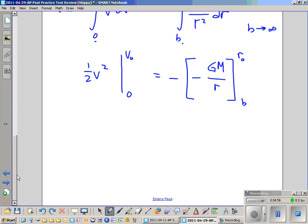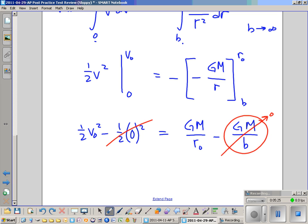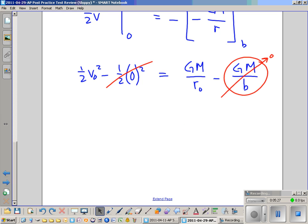So this means one half v naught squared minus one half zero squared, which is zero. It is going to be equal to GM over r naught minus GM over b, where, again, as b approaches infinity, this term right here approaches zero. Moving along, as you can see, we're already where we need to be without all that stuff we did in the previous version.